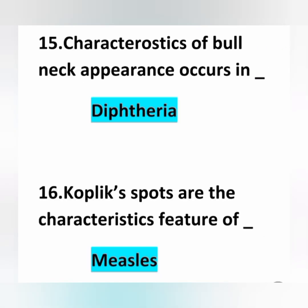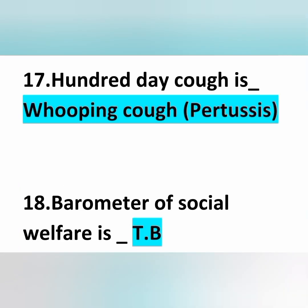Bull neck appearance is a characteristic of diphtheria. Koplik's spots are the characteristic features of measles. Hundred-day cough is known as whooping cough, which is also known as pertussis.